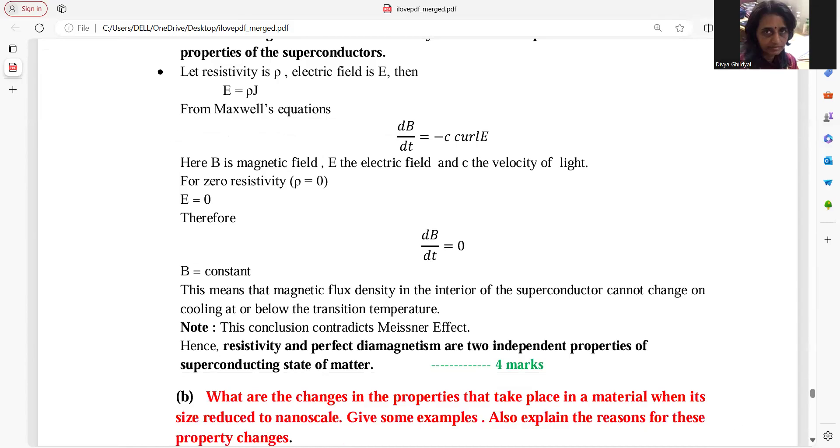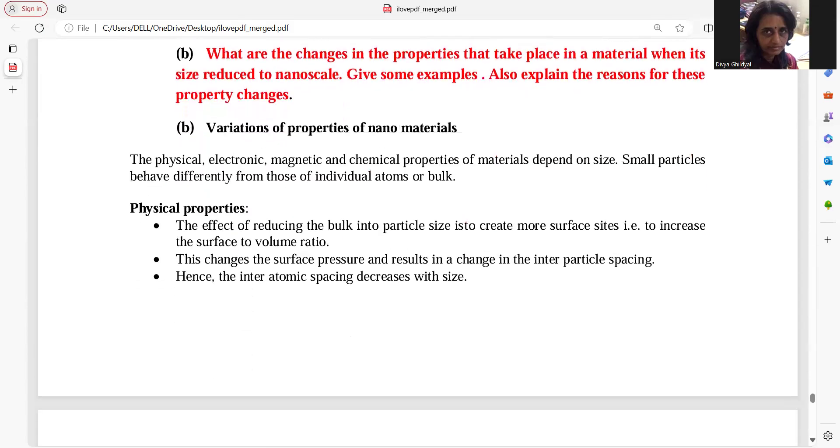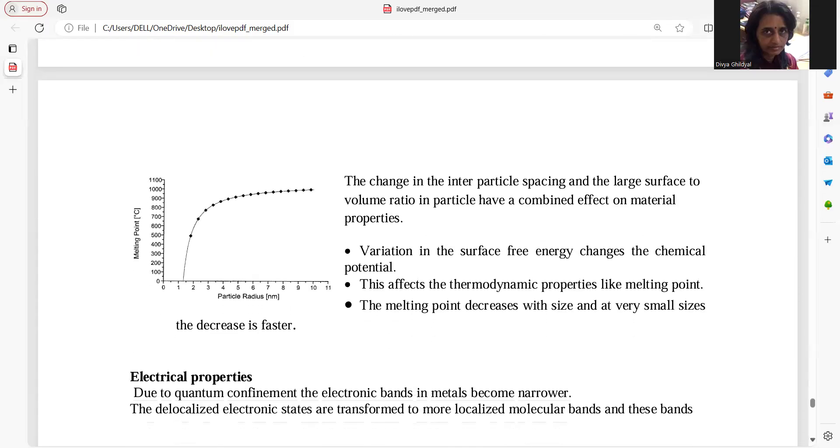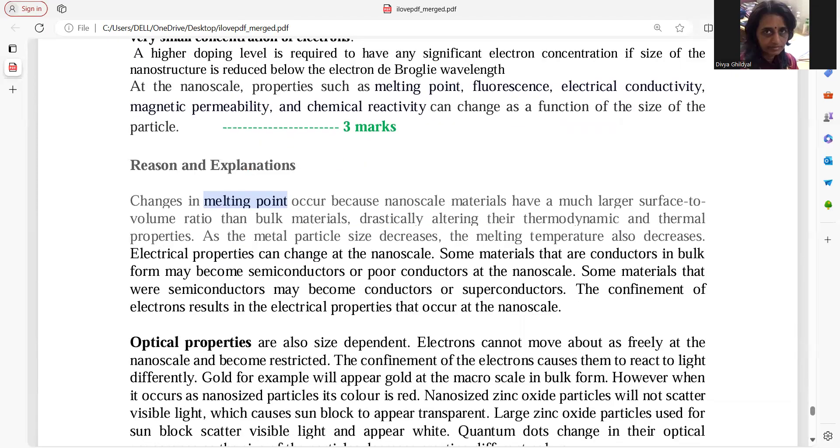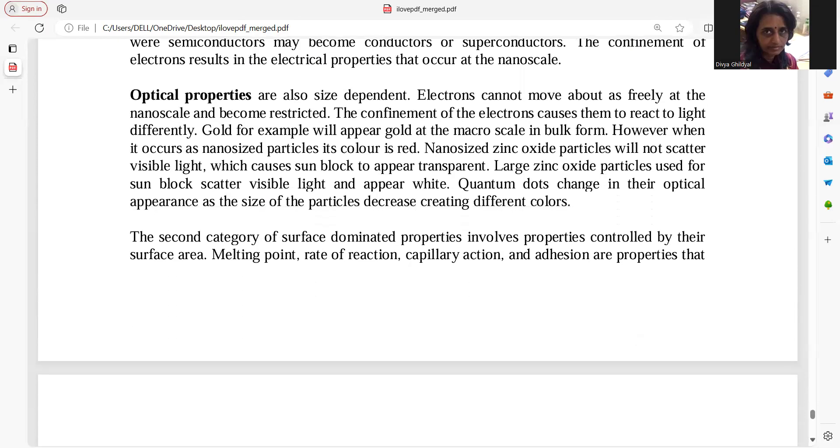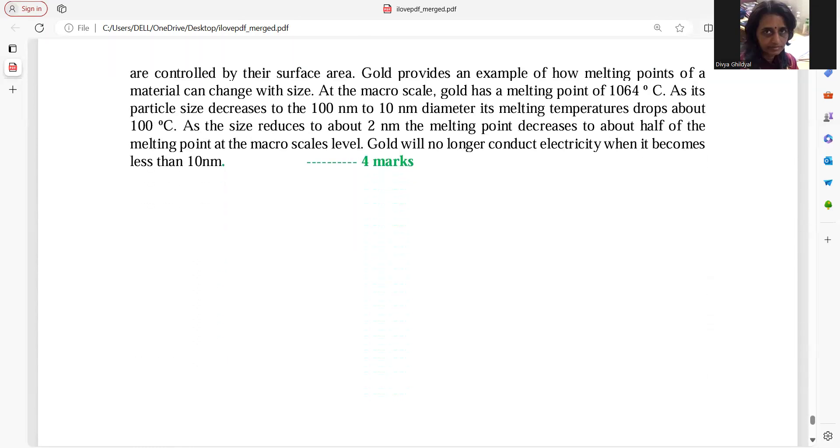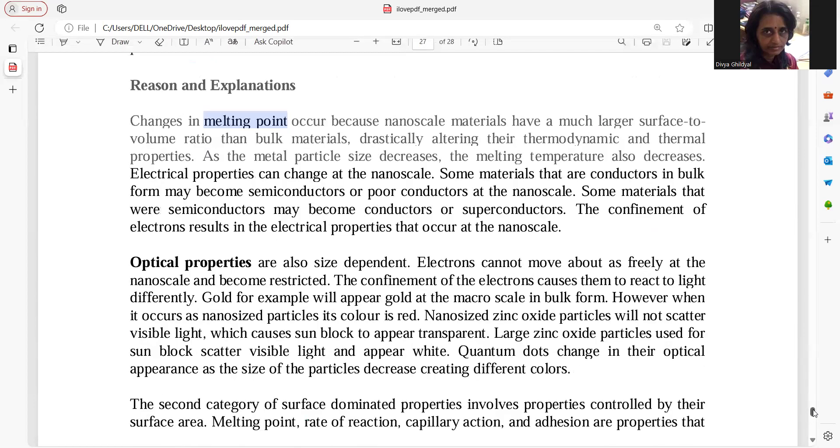Last question is again more of discussion of nanomaterials, how their properties vary. If you break it, two marks for changes. Example two, three for the explanation part makes it seven marks. Physical property, electrical property, reasons, melting point, temperature, size, all these points you can just jot them down and write a detailed explanation and you get your seven marks.